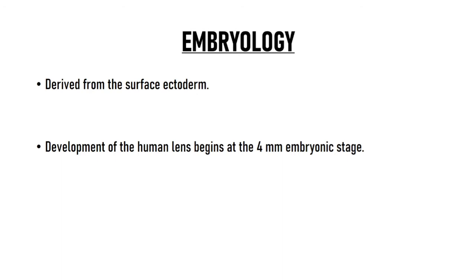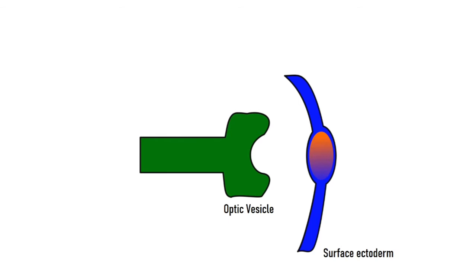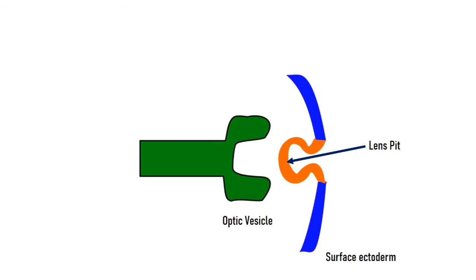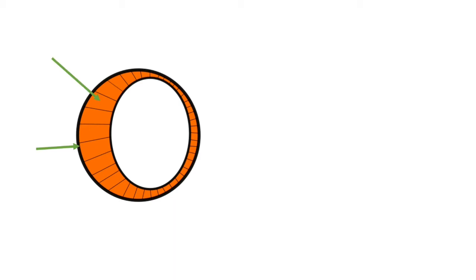The lens is derived from the surface ectoderm. Development begins at the 4-millimeter embryonic stage, when the neural ectoderm forms an outpocketing known as the optic vesicle. The optic vesicle contacts the surface ectoderm, inducing formation of the lens placode. The lens placode then deepens and invaginates, forming a depression called the lens pit. The lens pit continues to deepen and eventually separates from the surface ectoderm at the 10-millimeter stage to form a lens vesicle.